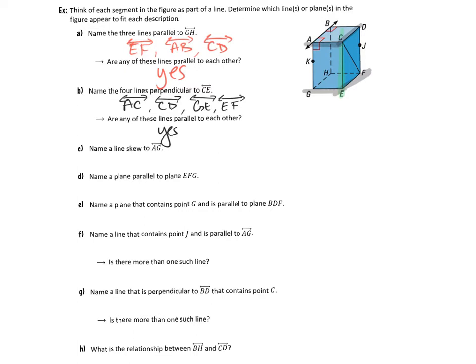The second part of B asks if any of these lines are parallel to each other. The answer is yes — some are. Line AC is parallel to line GE, and line CD is parallel to line EF. So while pairs of them are parallel, they are not all parallel to all the other lines.